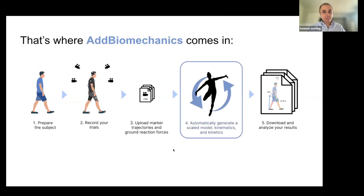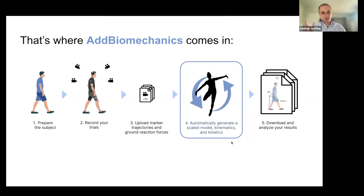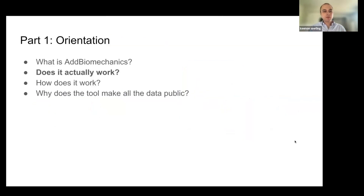So what if you automated this step in your workflow? That's where Ad Biomechanics comes in. We take the output of your motion capture system and are able to automatically produce scaled, accurate, even physically dynamically accurate models of your subjects, and then you can use your results right away. So that sounds great — but does it actually work?